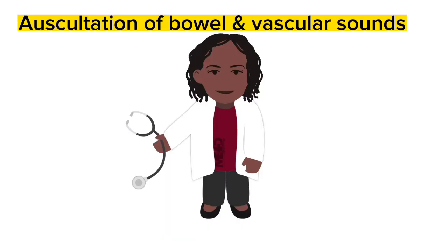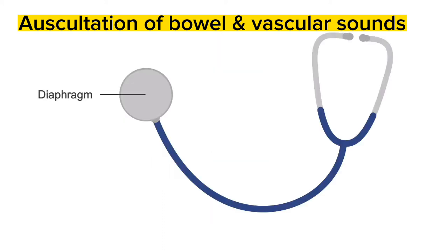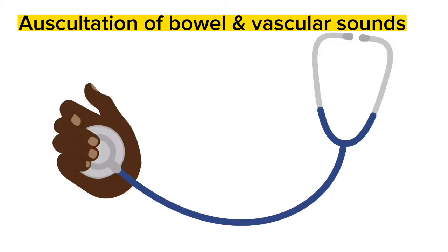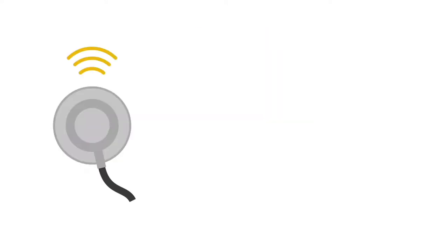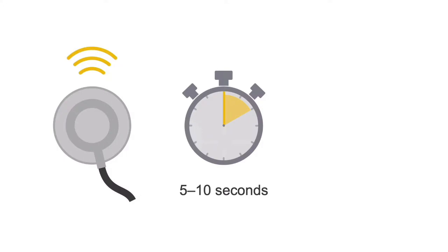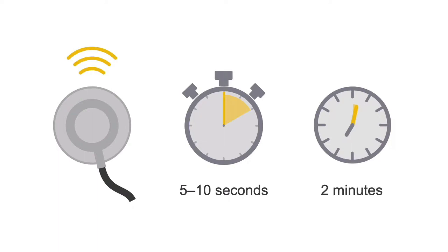Auscultation of the abdomen uses the stethoscope to generally assess bowel sounds and bruits or murmurs. Use the diaphragm of your stethoscope, and warm it up by placing it in your hands to make it more comfortable on the patient's skin. Listen for bowel sounds to the right of the umbilicus, where the mid portion of the small bowel is located, then proceed to listen to all four quadrants. Normally, bowel sounds are low-pitched gurgling sounds that occur every 5 to 10 seconds with peristalsis. Note that this frequency varies per person, so listen for at least 2 minutes before concluding that bowel sounds are absent.